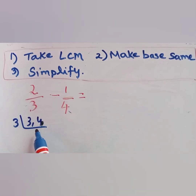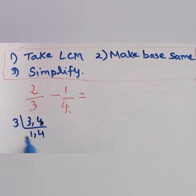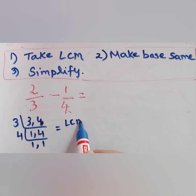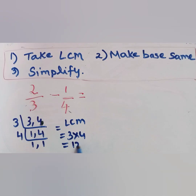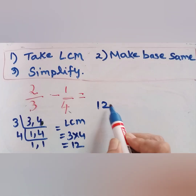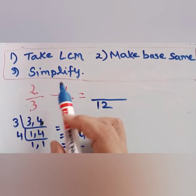We divide with 3: 3 ones are 3 and 3 fours are 12. Then with 4: 4 ones are 4 and we write 1. So the LCM is 3 × 4, that is 12. We write the LCM as 12.